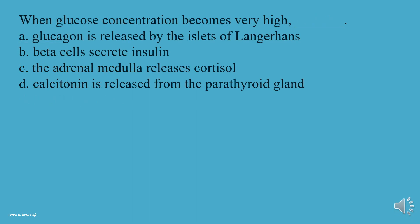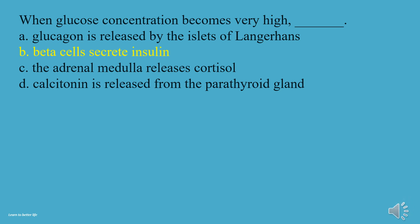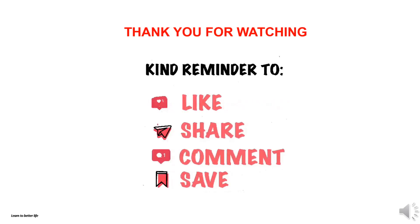When glucose concentration becomes very high: A, Glucagon is released by the islets of Langerhans. B, Beta cells secrete insulin. C, The adrenal medulla releases cortisol. D, Calcitonin is released from the parathyroid gland. The answer is B, Beta cells secrete insulin.